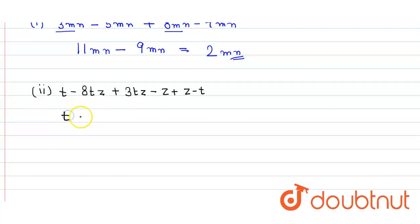Here we get t + 3tz and then plus z plus z minus, in the bracket here we get 8tz and then plus z and then plus t, because we have taken the negative common from all of them.